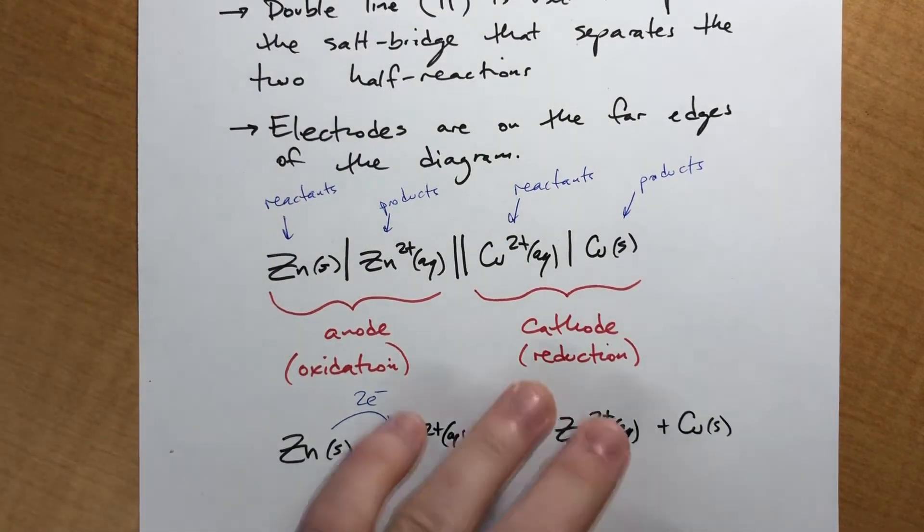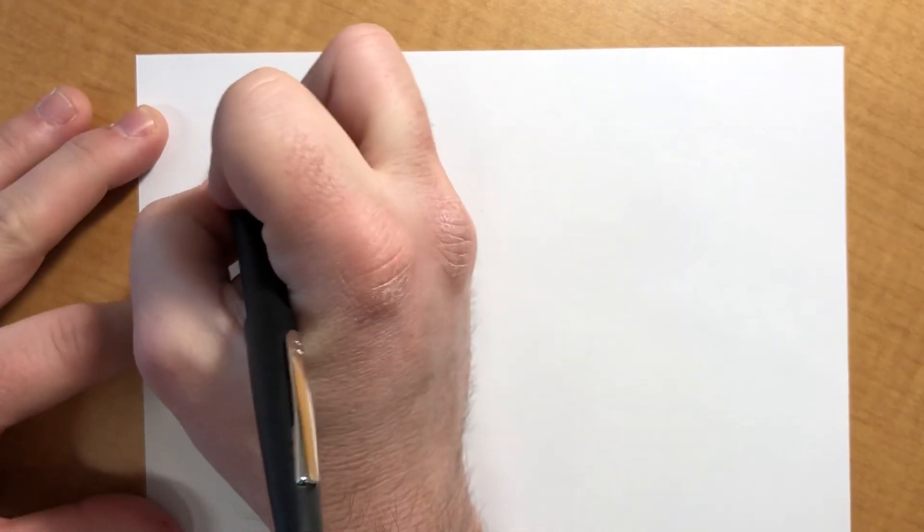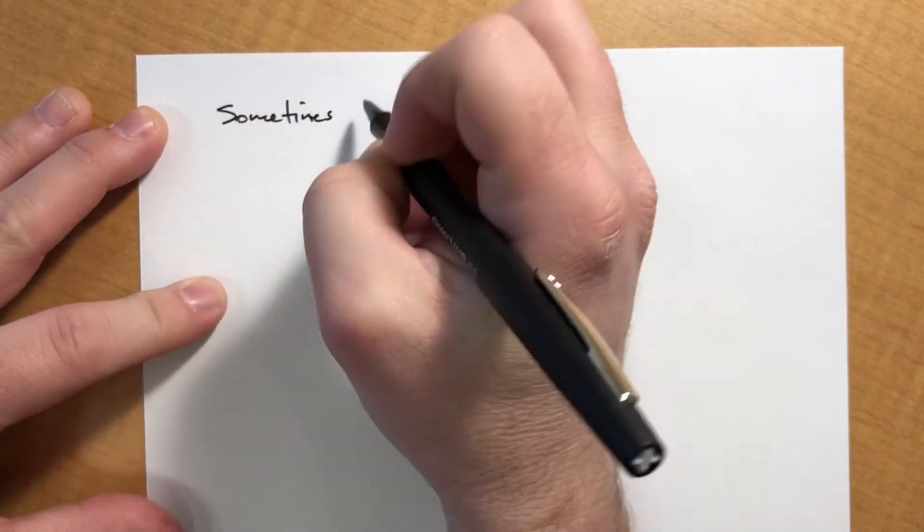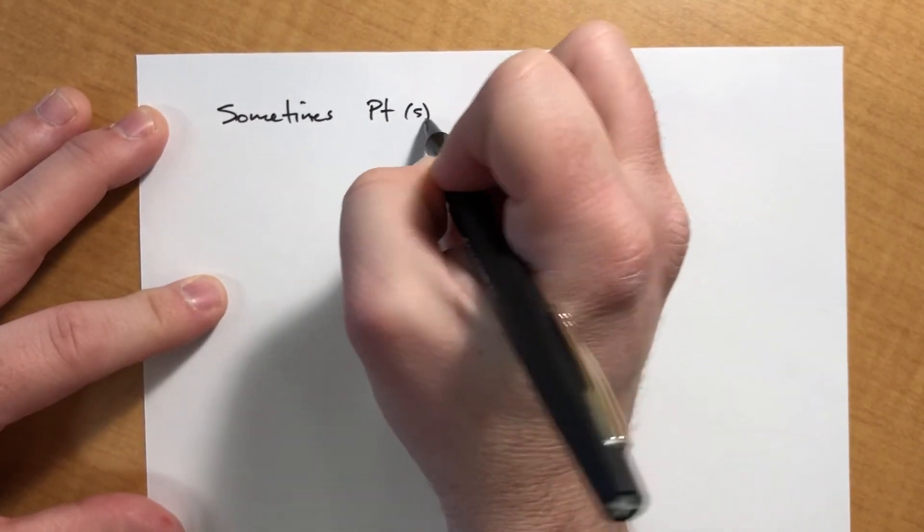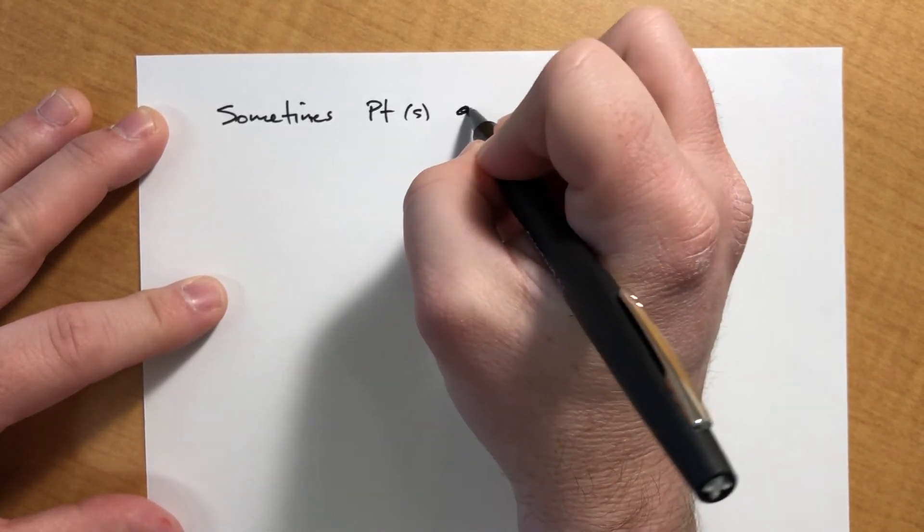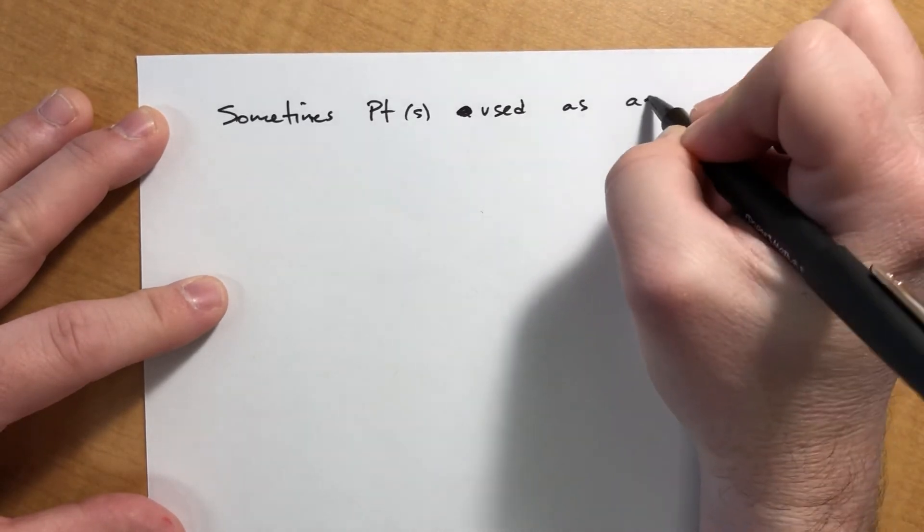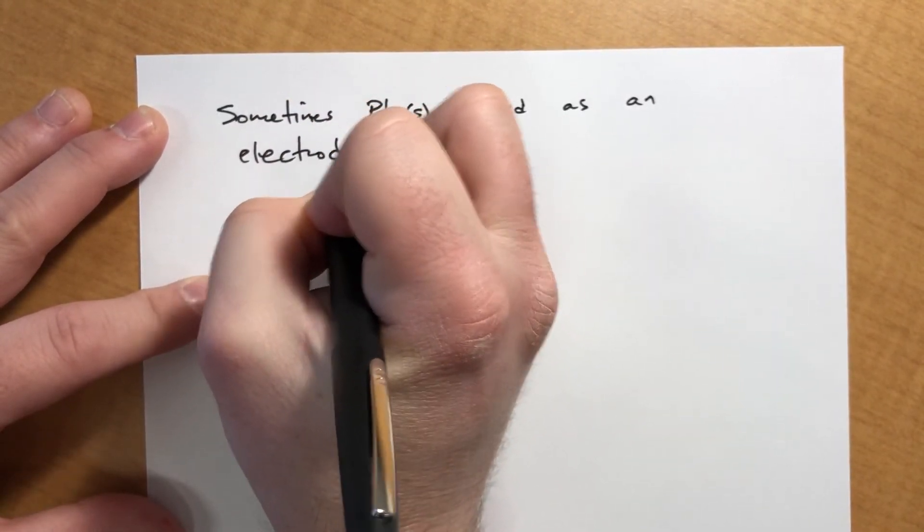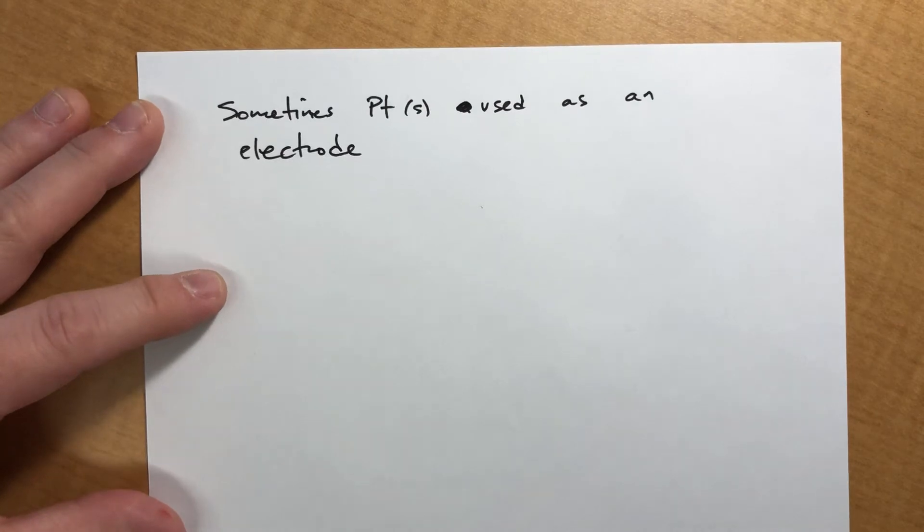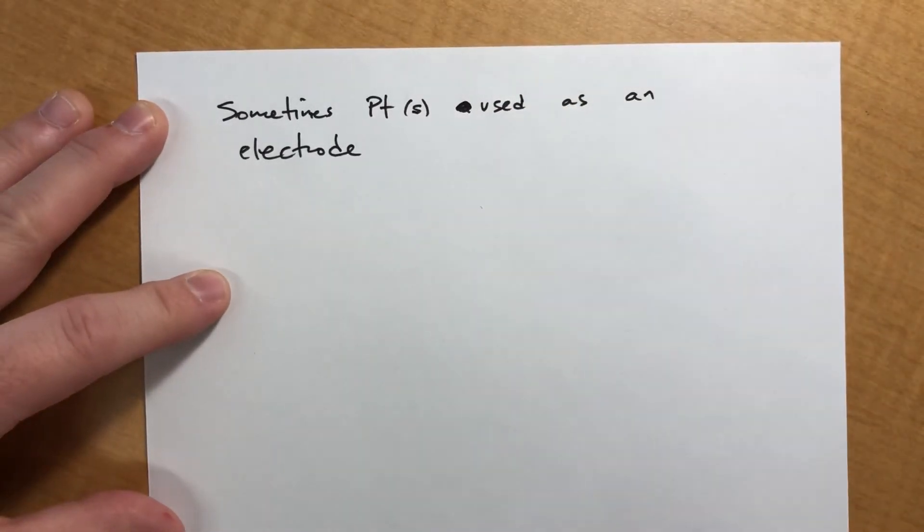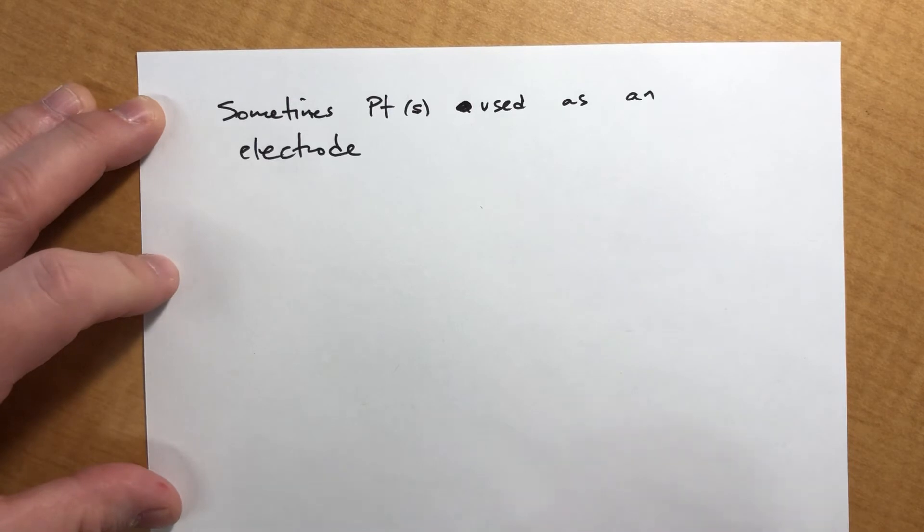I will point out that not all half reactions involve a metal. There are some of these that don't work like that. So sometimes we use platinum as it's used as an electrode. So here's the problem, is that basically there are some reactions, like for example, it is entirely possible to have this half reaction and there is an exchange of electrons.